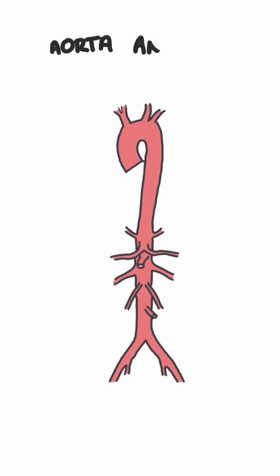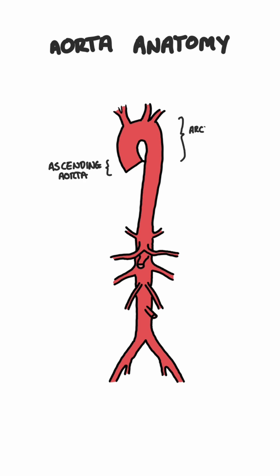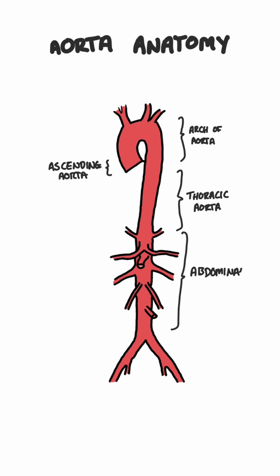The aorta is the largest blood vessel in the body. There are four regions of the aorta: the ascending aorta, the arch of the aorta, the thoracic aorta, and finally the abdominal aorta.